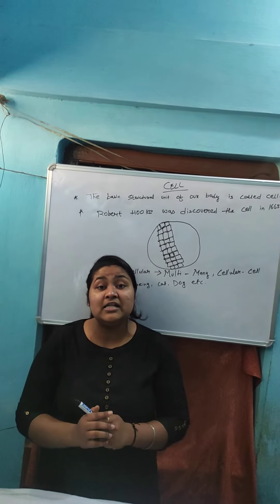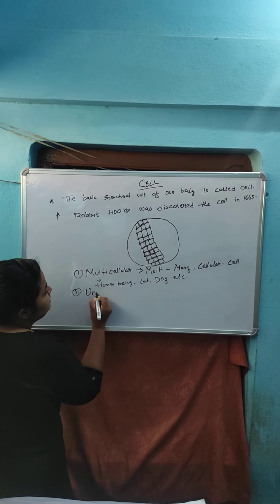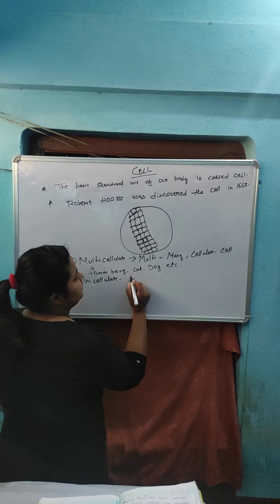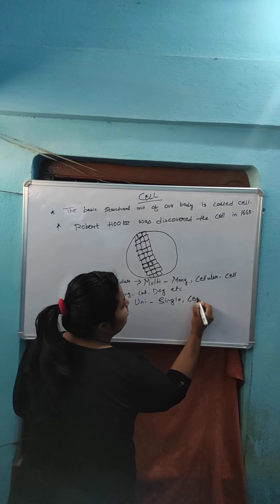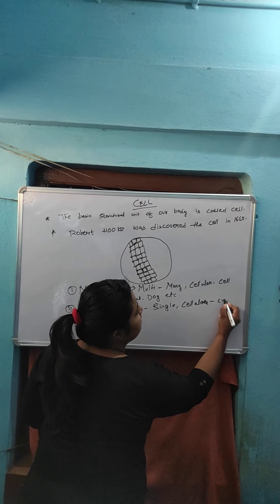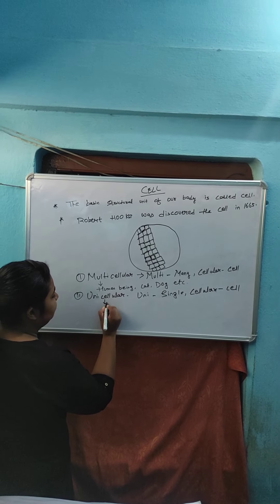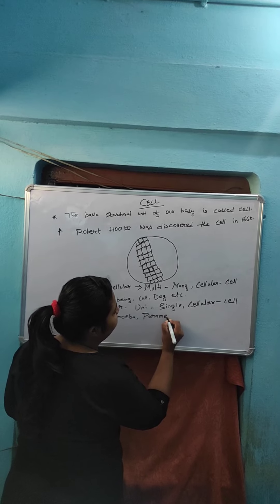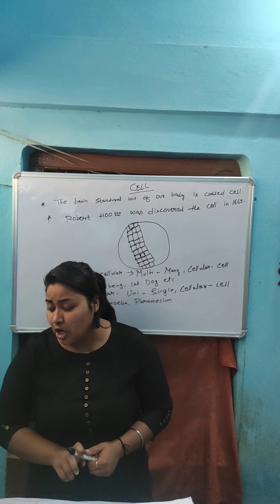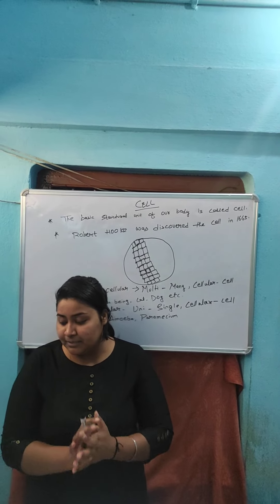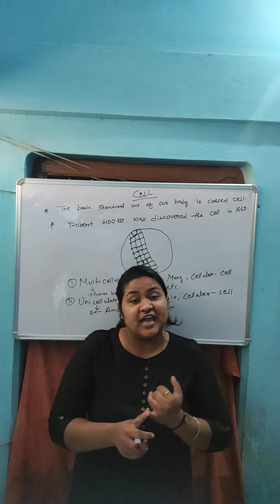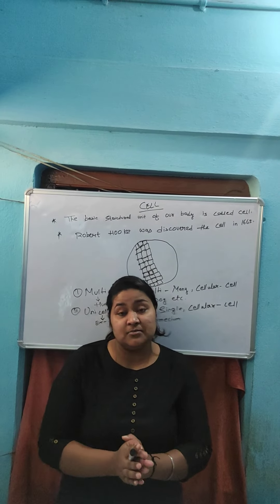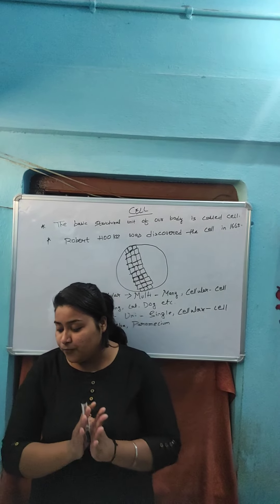Amoeba and paramecium are both single-cell organisms. A single-cell organism is called a unicellular organism. Here 'uni' means single and 'cellular' means cell. For example, amoeba and paramecium are both made up of a single cell. A single-cell organism performs all the necessary functions that multicellular organisms also perform. The single cell organism like amoeba can capture and digest food, respire, excrete, grow, and reproduce.